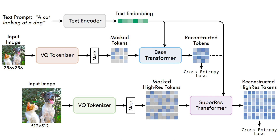This sequence is masked at a variable rate per sample, and the cross-entropy loss learns to predict the masked image tokens. Once the base model is trained, the reconstructed lower-resolution tokens are passed into the super-res models, which learn to predict masked tokens at a higher resolution.